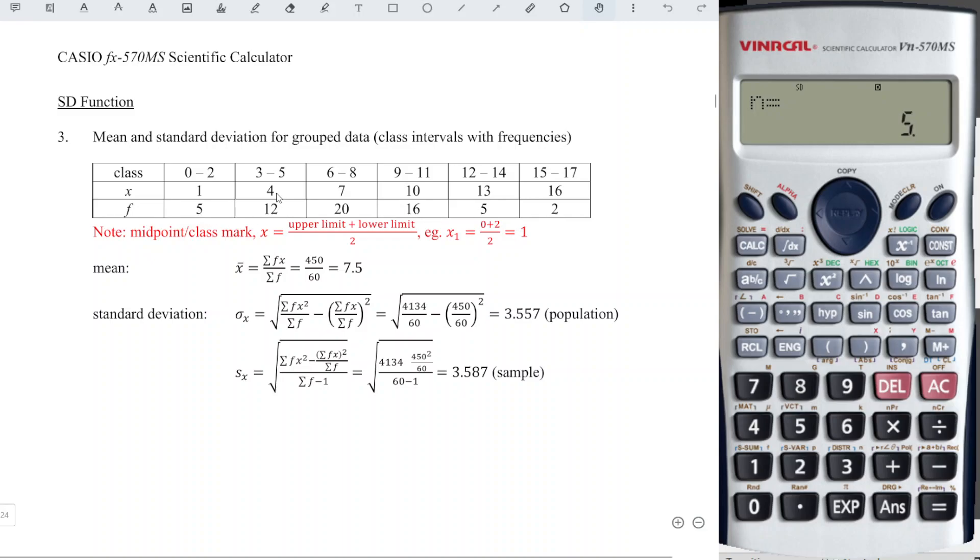Next, the second class, we have 4, semicolon, 12, n plus. We have now 17 observations, which is 5 plus 12.